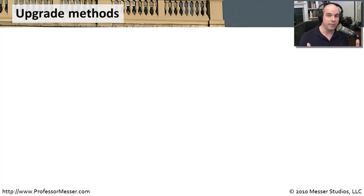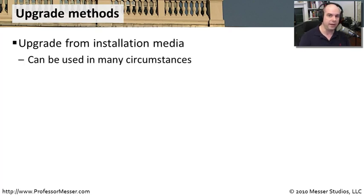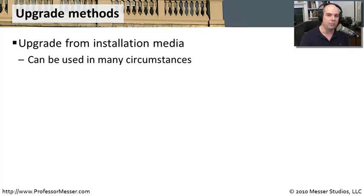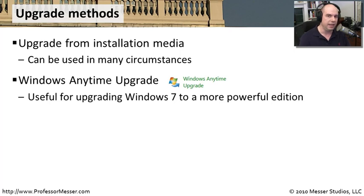There are a few ways to perform an upgrade to Windows 7. The first way is simply from the installation media. You slide your installation media into a DVD-ROM, or start it from whatever resource you might have, and start the installation. It will recognize that you're running Windows Vista and prompt you for upgrading. Very easy to do, and that's probably how you'll do it most of the time on individual computers.